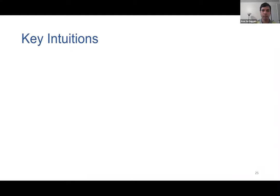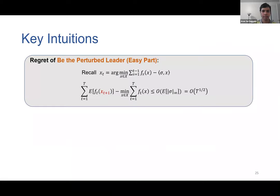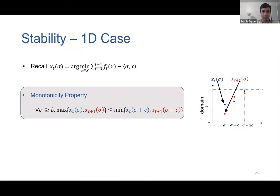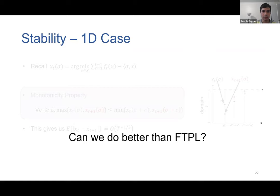In the interest of time, I won't go into the proof of our result, but I'm happy to discuss offline. Instead, I'll jump to the next part of the talk on optimistic variants of the FTPL algorithm. These variants achieve better regret bounds than FTPL and lead to faster algorithms for solving two-player games.